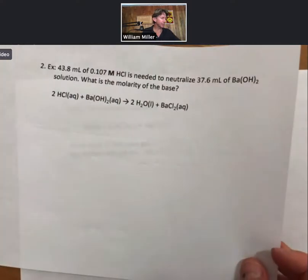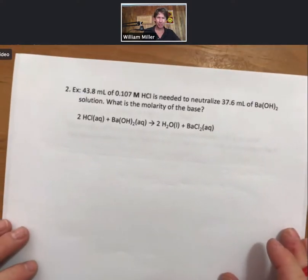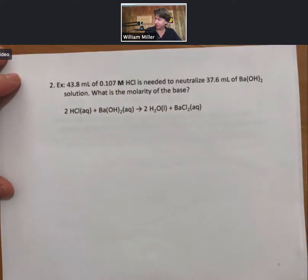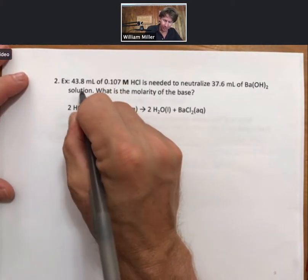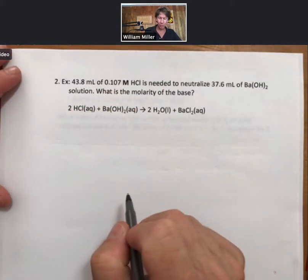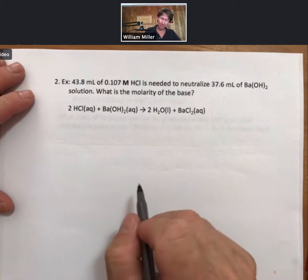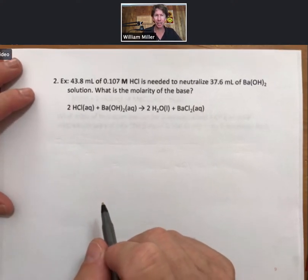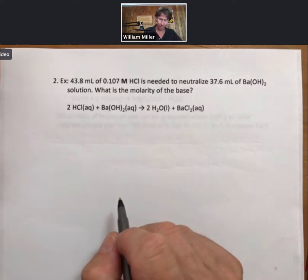Now, a slightly different example, but still pretty similar, is going to involve 43.8 milliliters of 0.107 molar HCl needed to neutralize some barium hydroxide. What is the molarity of the base? So this time we're not asking for volume, we're asking for molarity. So I just want to give myself a heads up what we're looking for here.